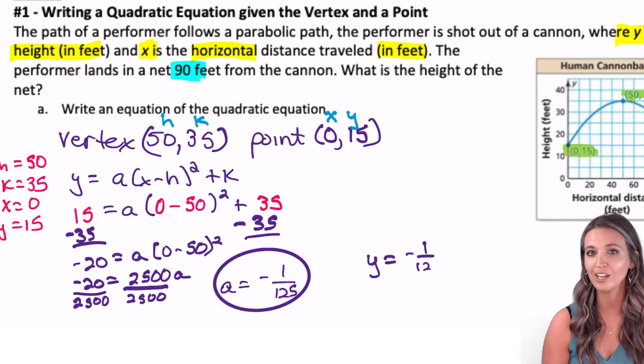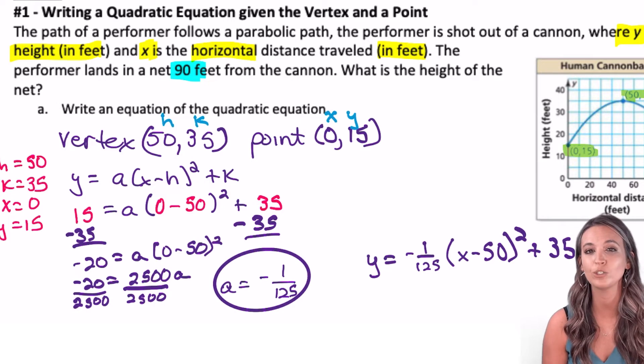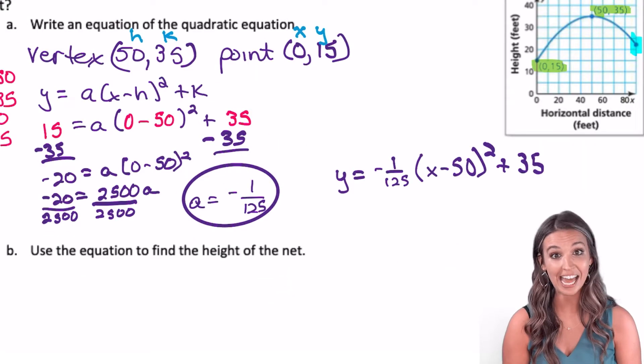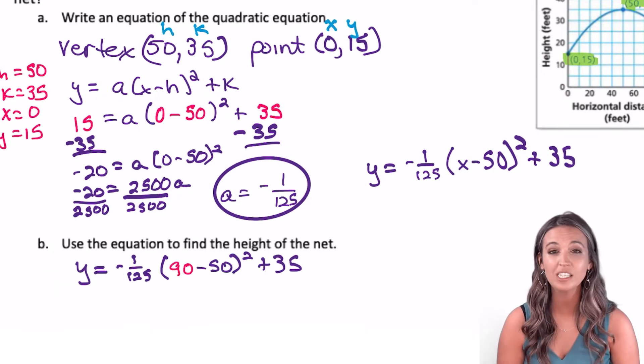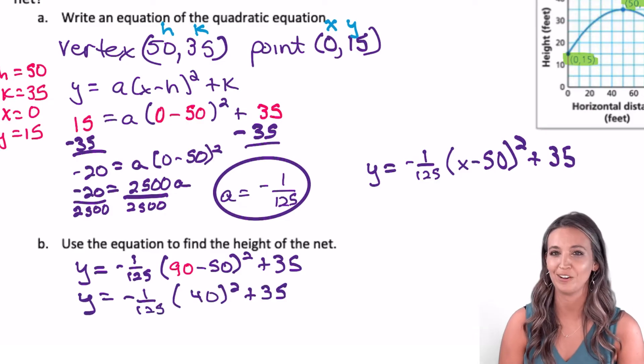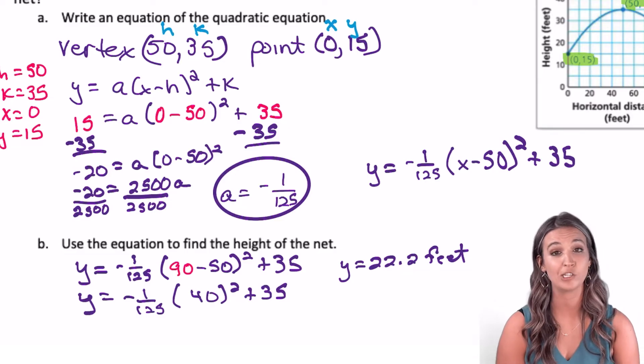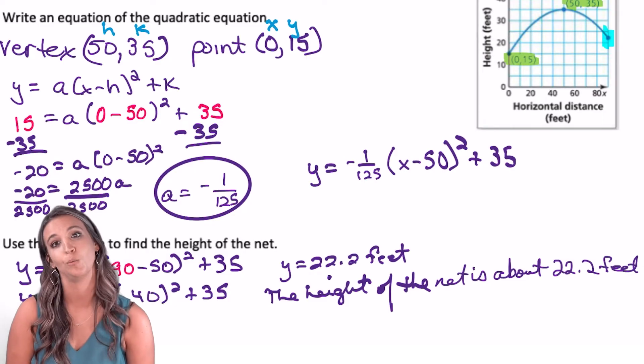Now I can write my quadratic equation in vertex form with this a. Y equals negative 1 divided by 125 times (x - 50)² + 35. Using this equation, we can now find out how high the net is. We know the net is 90 feet away from the cannon, so let's plug in 90 for x. For this context, it would be appropriate to use a calculator now. This calculates out to 22.2. Now we want to state our answer in context. The height of the net is about 22.2 feet.